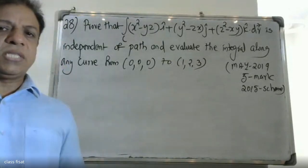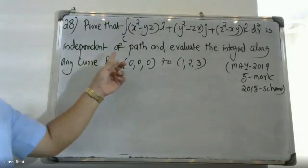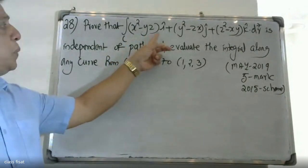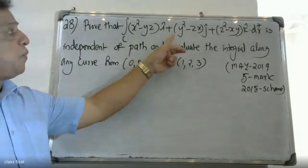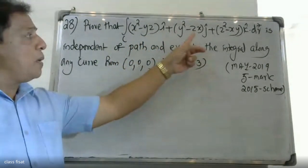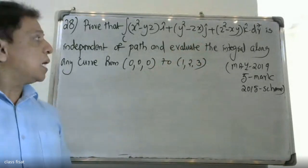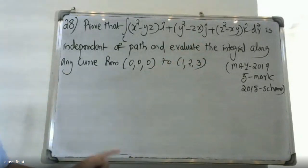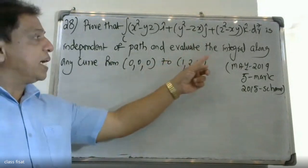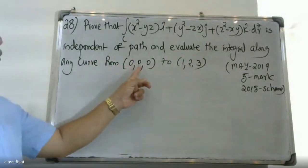Good morning students. The question asks to show that the integral of (x² - yz)i + (y² - xy)k · dr is independent of path, and evaluate the integral along any curve from (0,0,0) to (1,2,3).